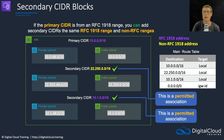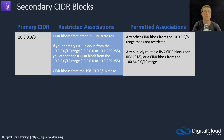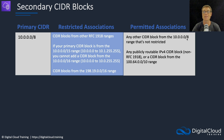In this case, the route table will have routes for each of those CIDR blocks marked as local. Now let's look at the detailed rules. If your primary CIDR block is in the 10 range, you cannot have CIDR blocks from other RFC 1918 ranges - that's the restricted association. If your primary CIDR block is from the 10/15 range, you cannot add a CIDR block from the 10/16 range. CIDR blocks from the 198.19.0/16 range are also restricted. What you can do is add any other CIDR block from the 10/8 range that's not restricted, or any publicly routable IPv4 CIDR block, or a CIDR block from the 100.64/10 range.